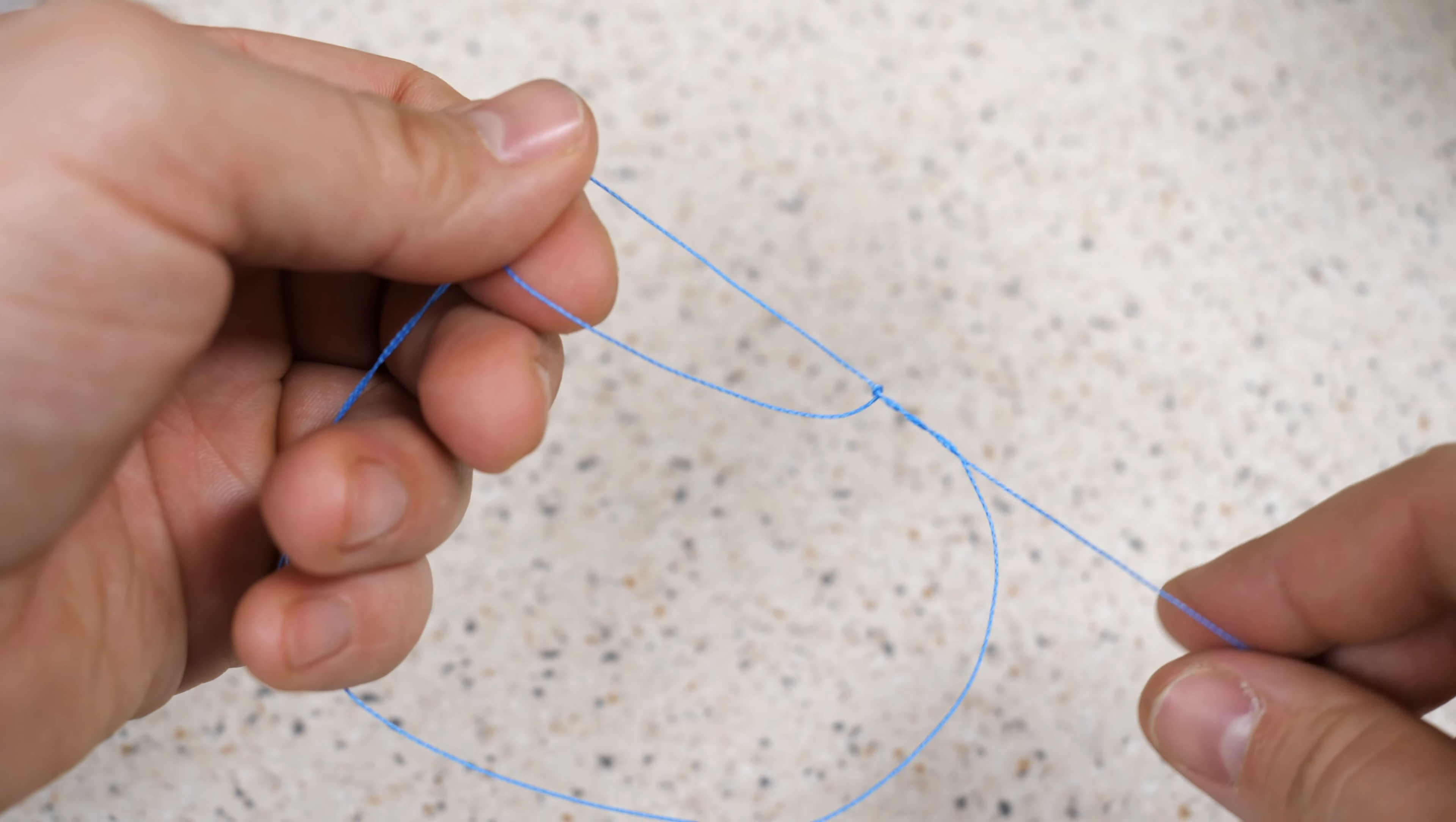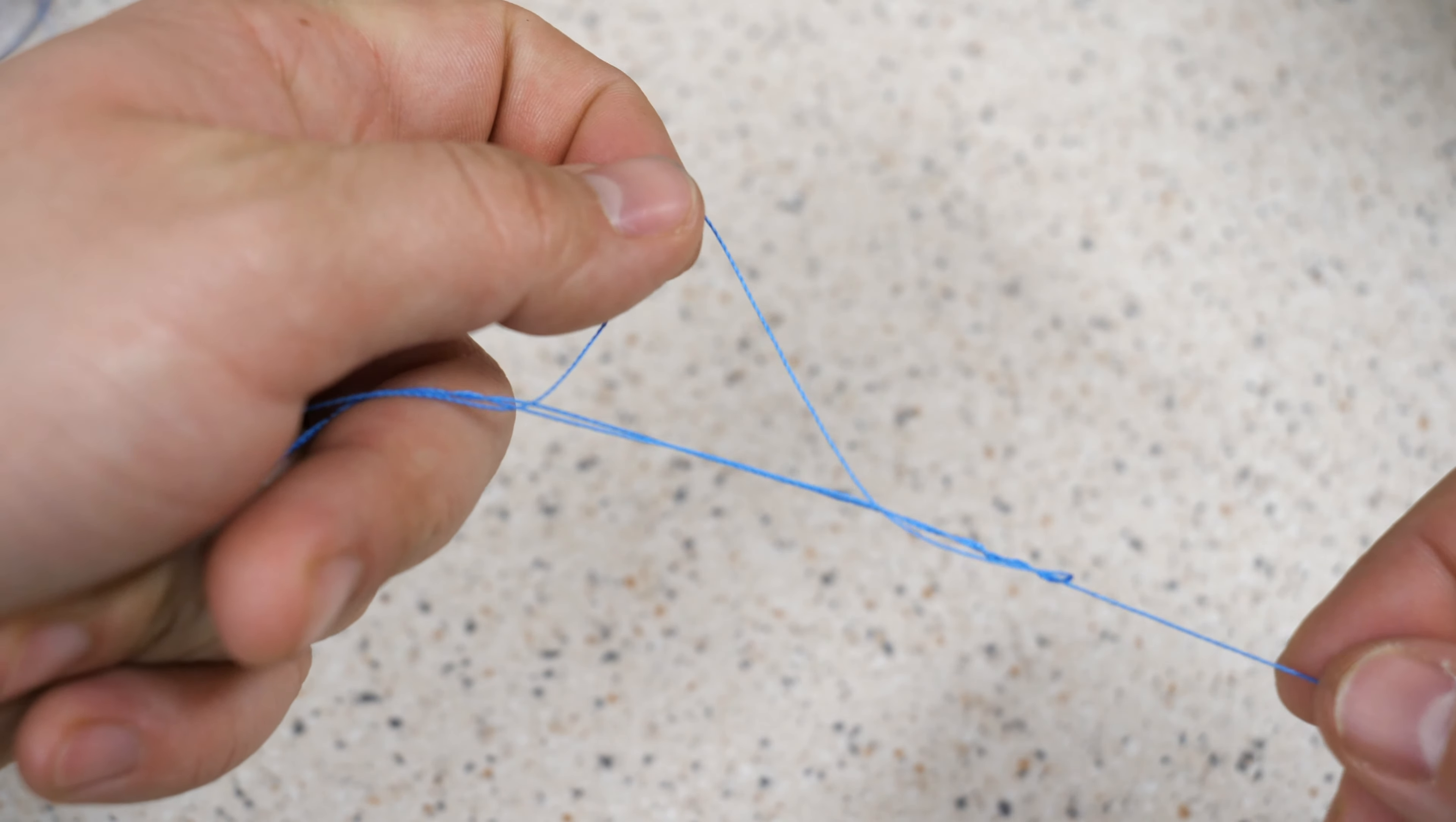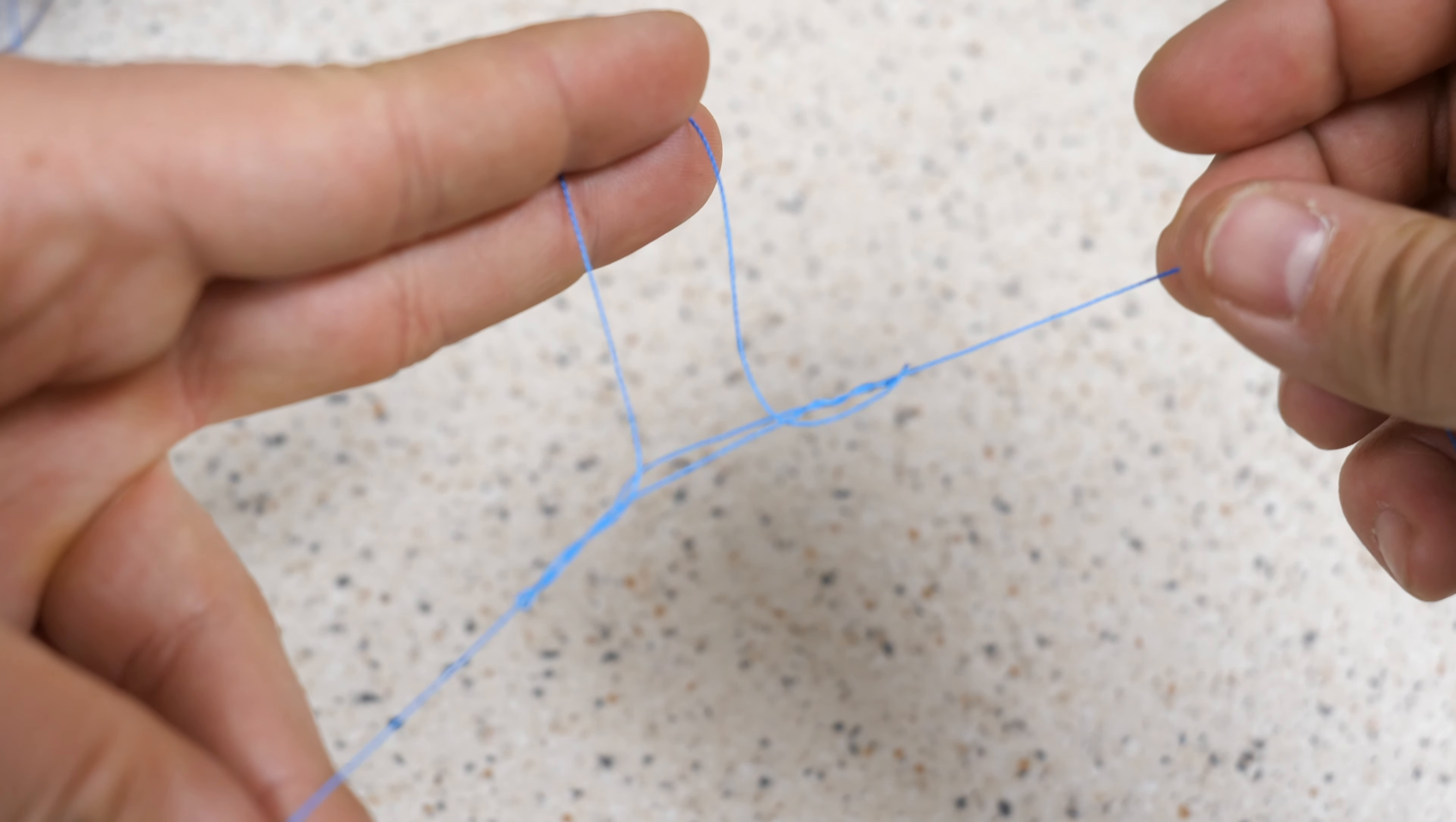And then push this line through that loop and just start pulling equally.